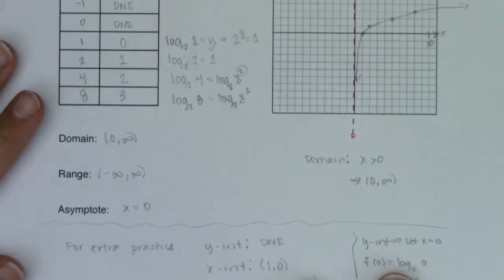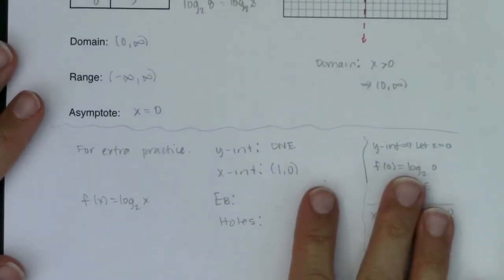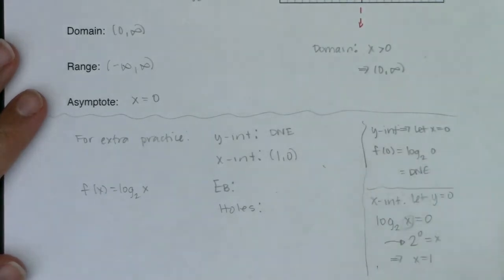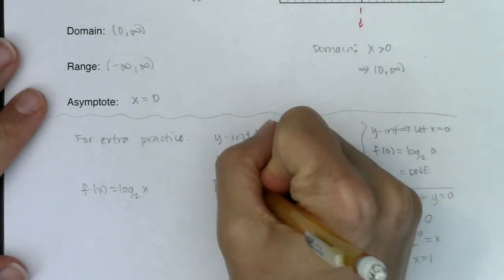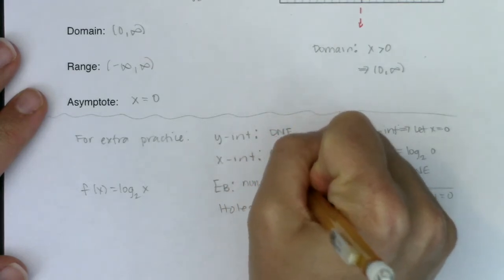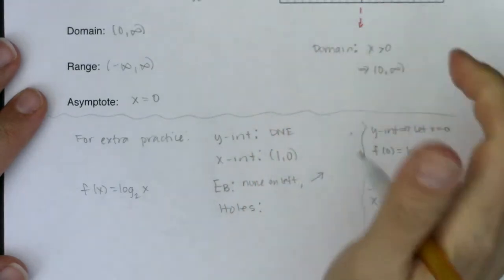So if I scroll this almost all the way back down. There we go. In terms of end behavior, I would say none on the left. But I have a right arrow headed up.